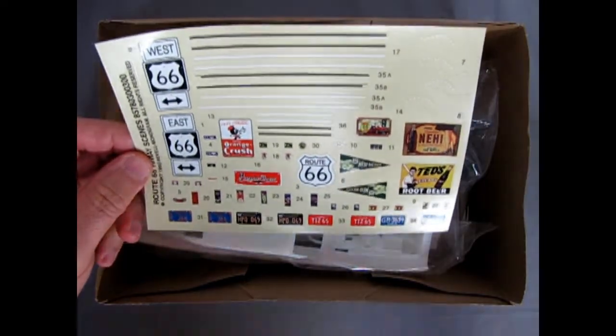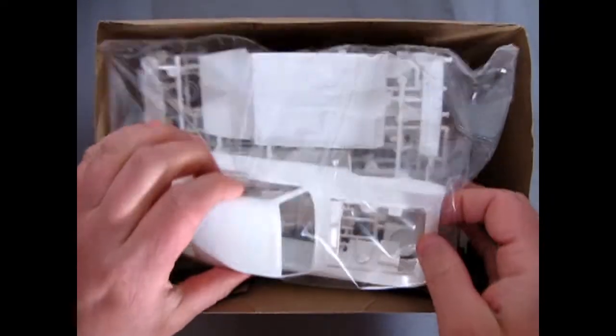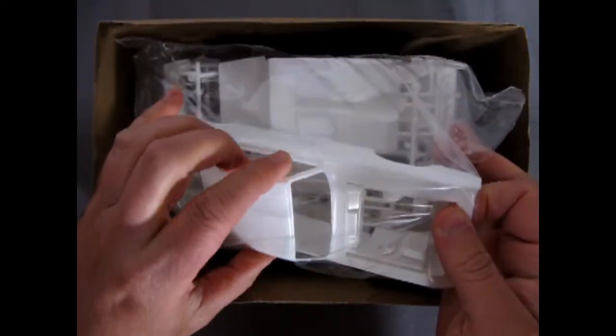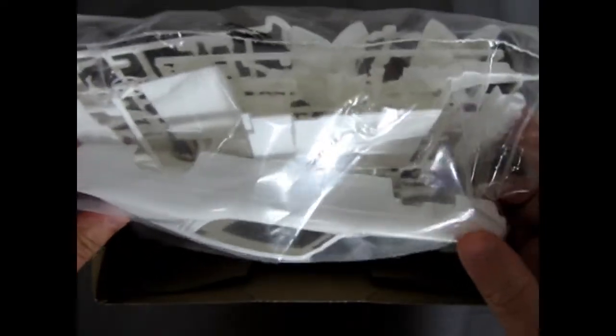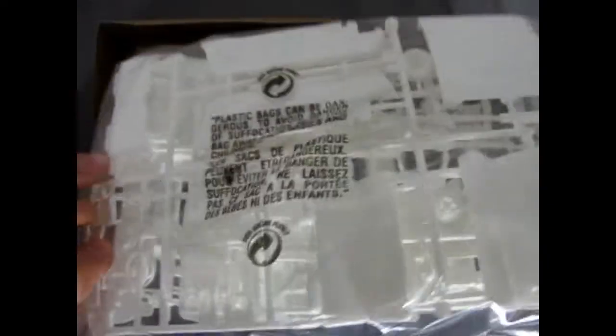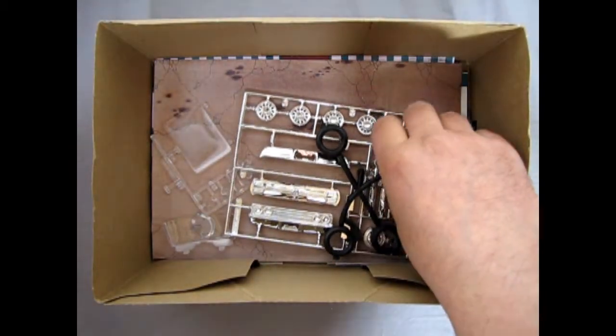Yeah, get your kicks on Route 66. Okay, just move that out of the way. Here is our body, uh-oh, got a little cracked window post in there, that's no fun. Oh well, it should be all right. This is a cool kit, I built a few in the past. All our white parts are in there.